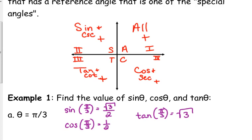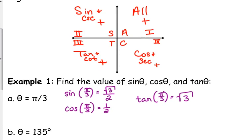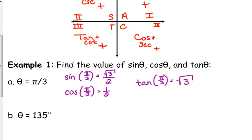Now, pi over 3 is in the first quadrant, so all those are positive. We don't have to worry about any of those having a negative value. So let's get to where we actually have to use this. If I ask you what's the sine, cosine, and tangent of 135 degrees without a calculator.